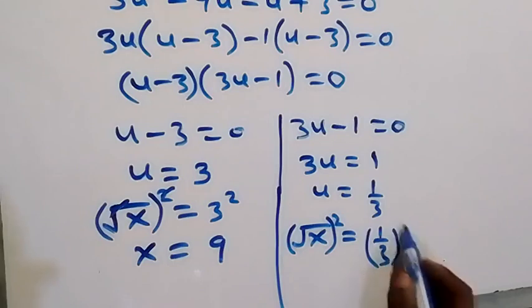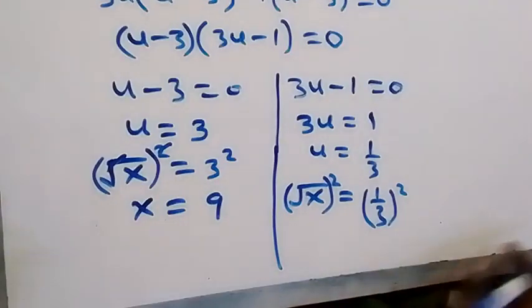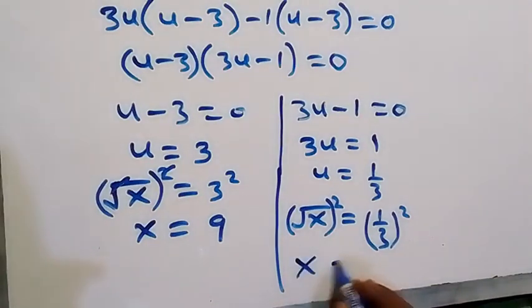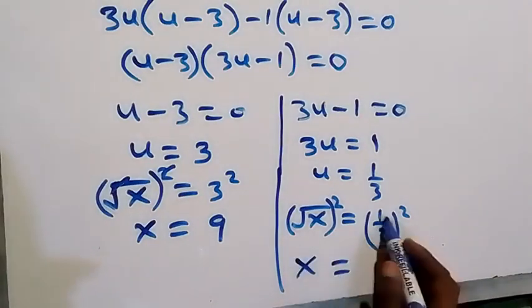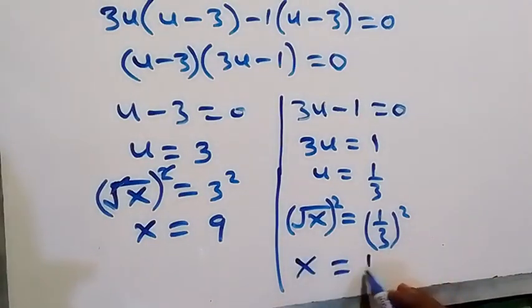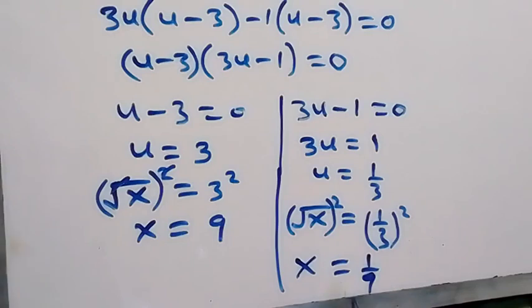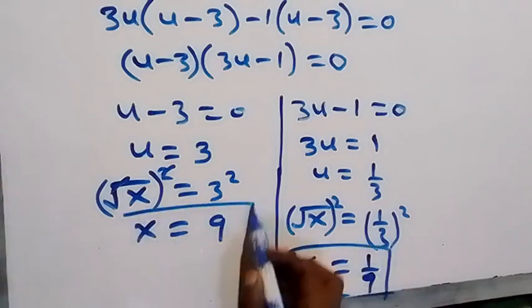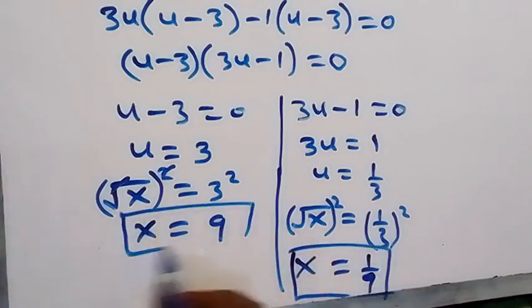Similarly, for u = 1/3: √x = 1/3. Squaring both sides, the square roots cancel. We get x = 1²/3² = 1/9.